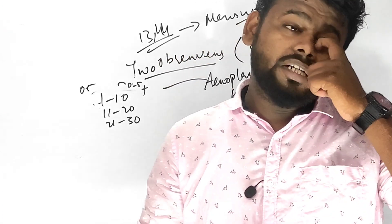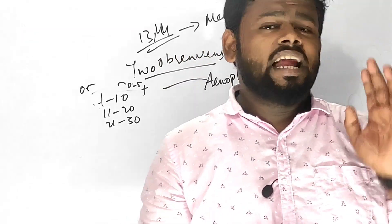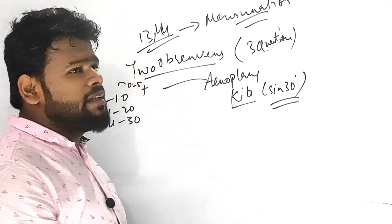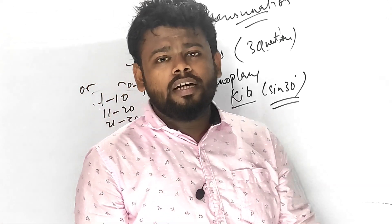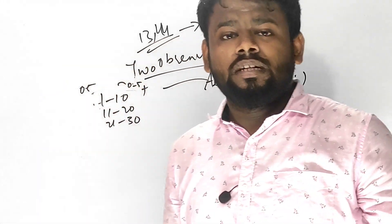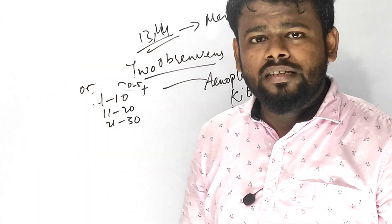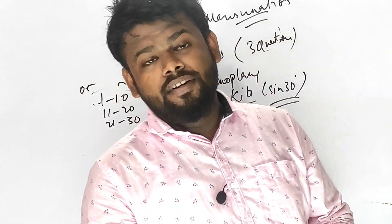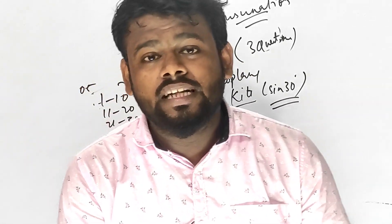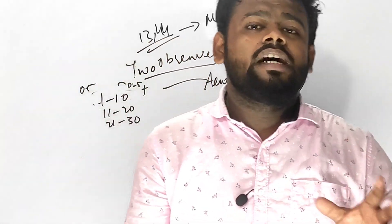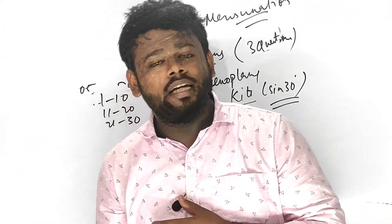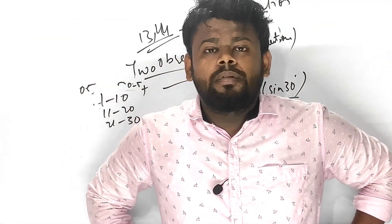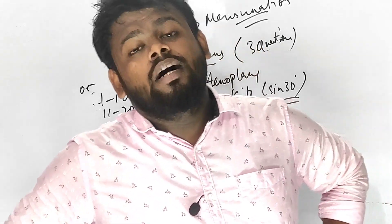For Equation of a Line, do the last exercise — around the last 7 to 8 questions of the last exercise, approximately question 13 onwards. For Circle, do all theorems, especially tangent — tangent is always asked in different forms every time. Do all kinds of theorems in Circle; from theorems alone you can get MCQs.